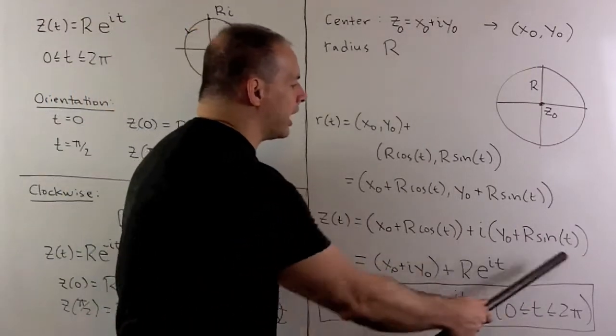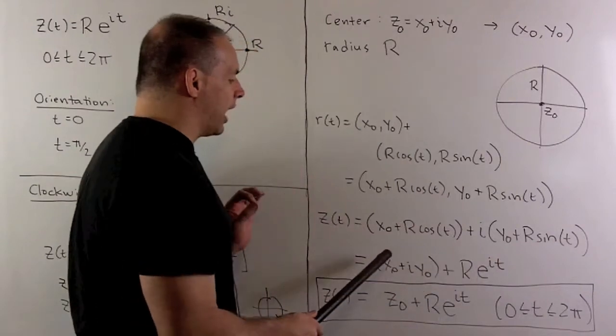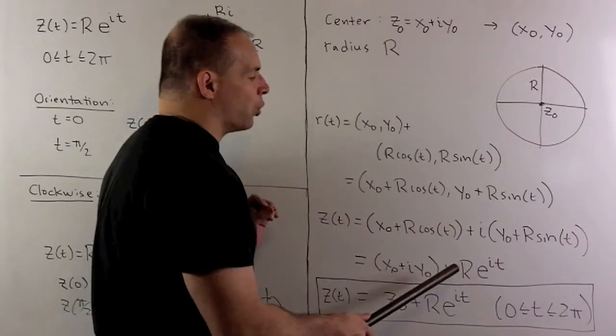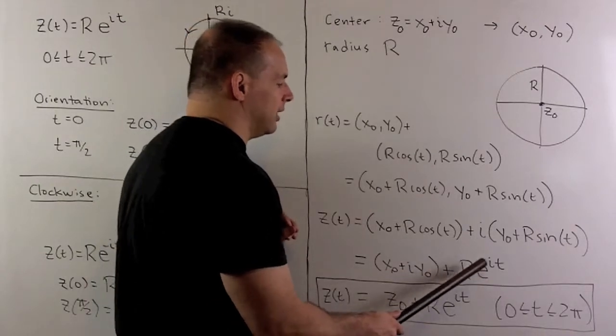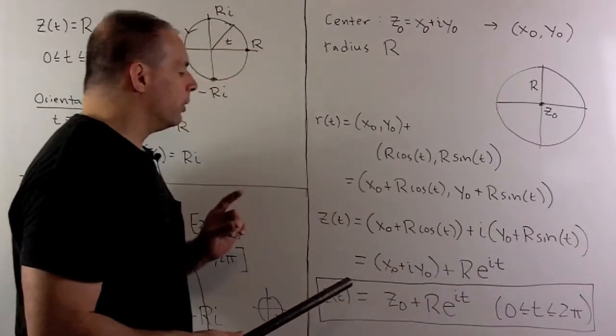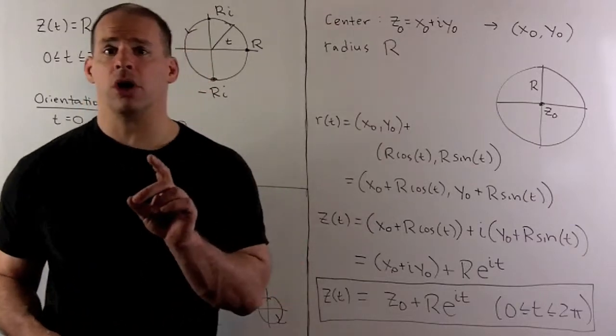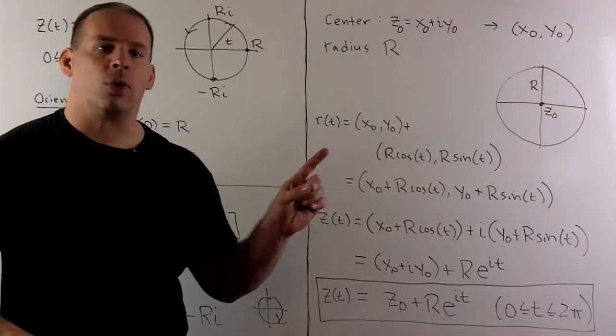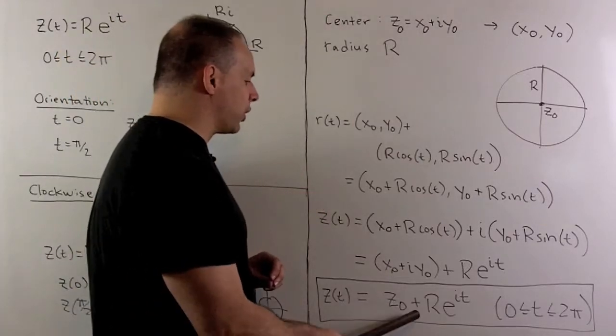We use our recipe. Then we just reorganize to get back to our x zero plus i y zero, which is z zero. Then we have, using Euler's formula, the R e to the it. So if I want to parameterize circle centered at z zero of radius R, we just use our old formula and add our center z zero.